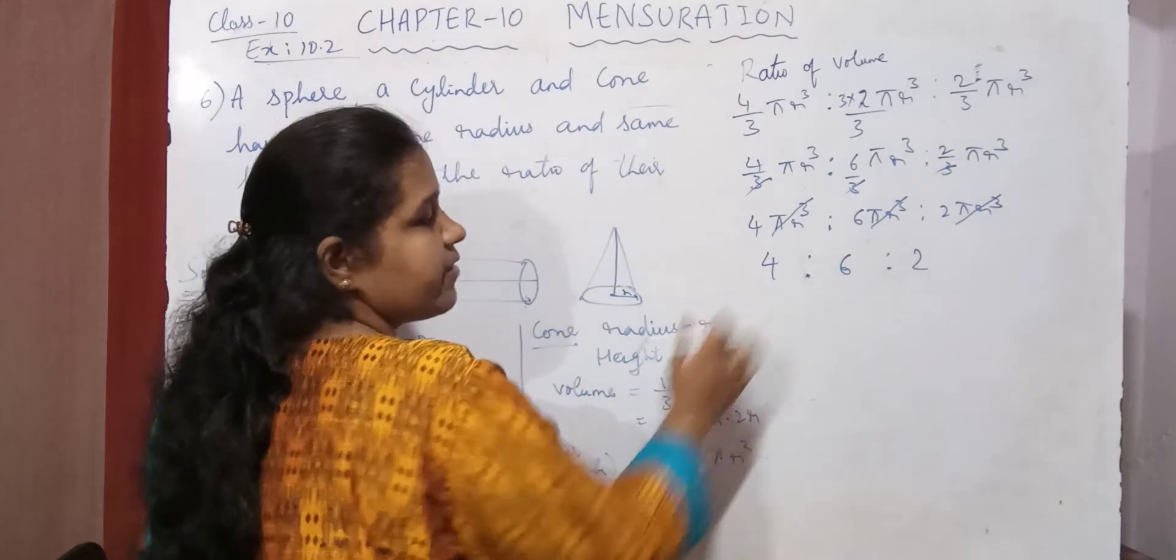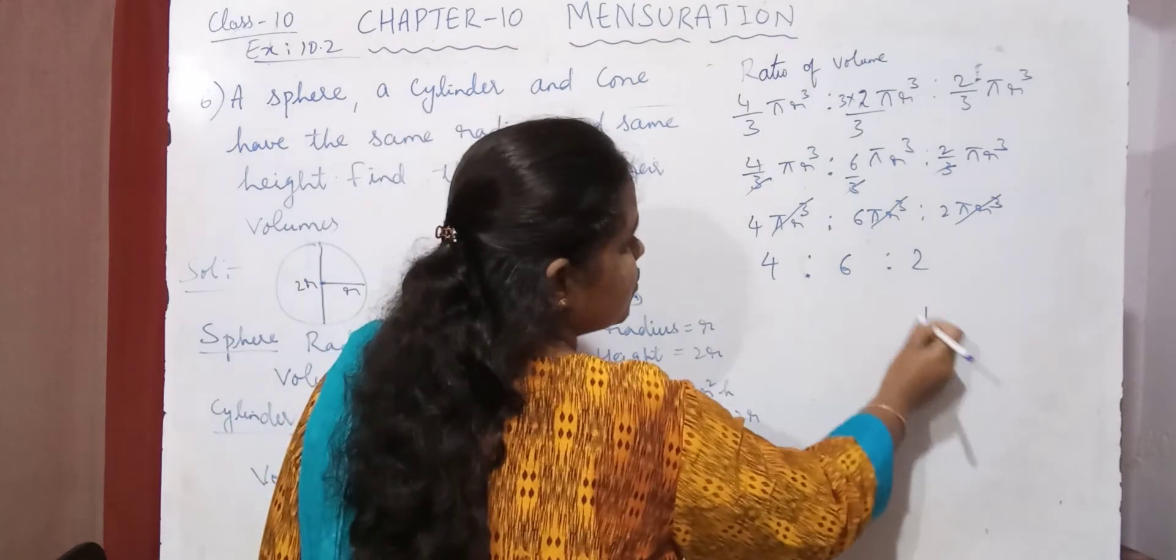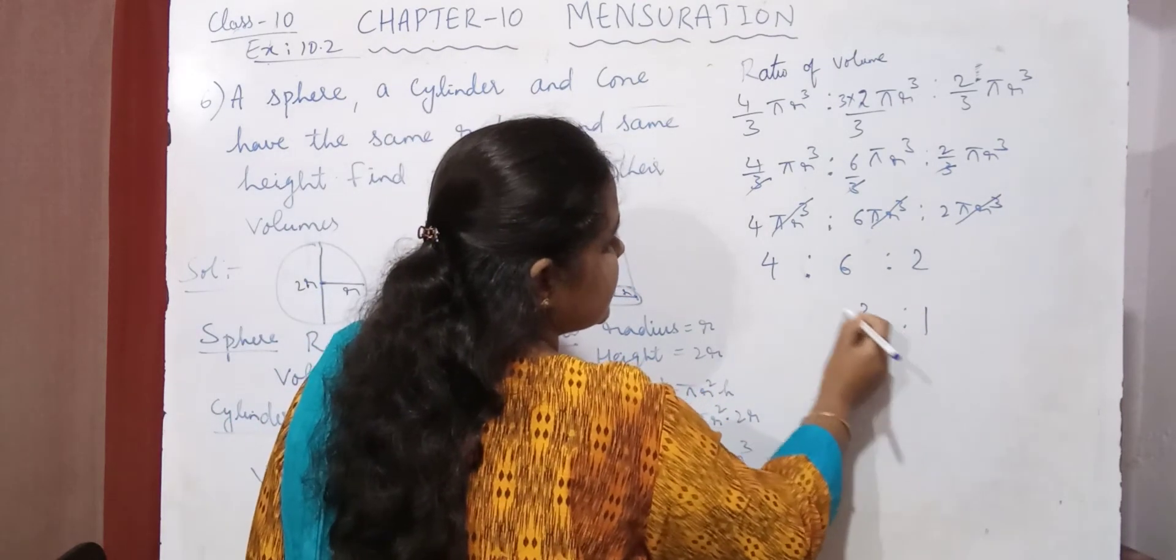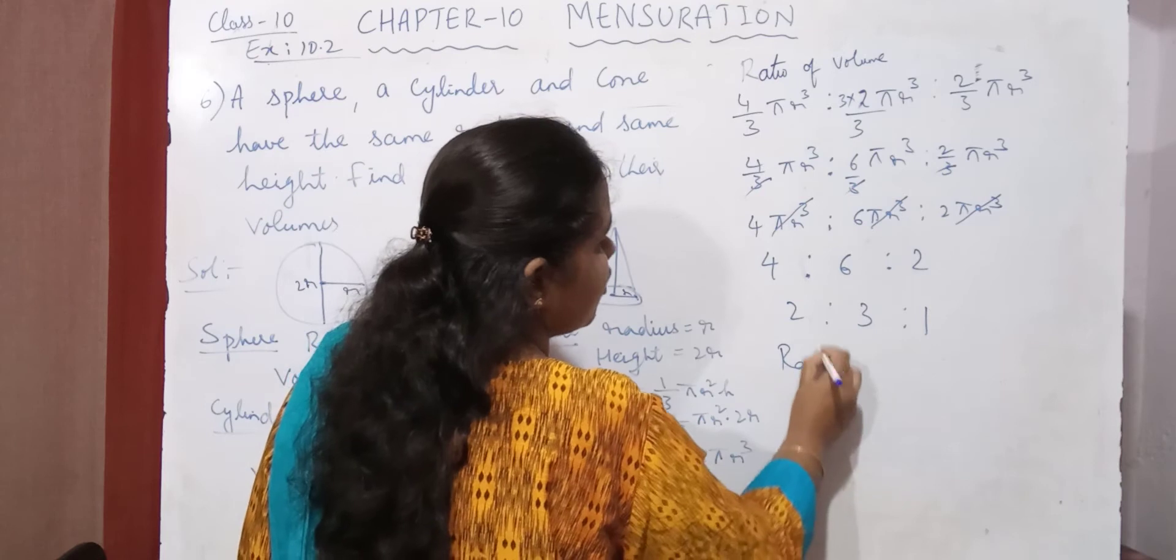Now cancel with 2. So 2 1 side is 2. 2 3 side is 6, 2 2 side. So what is the ratio of the volumes?